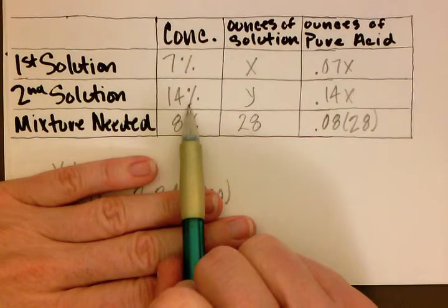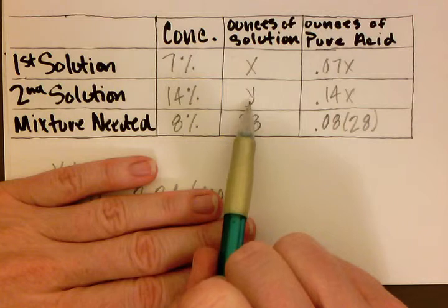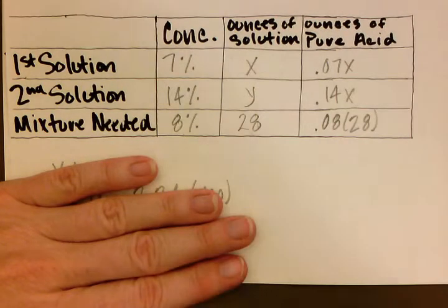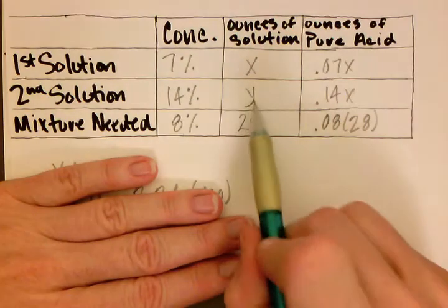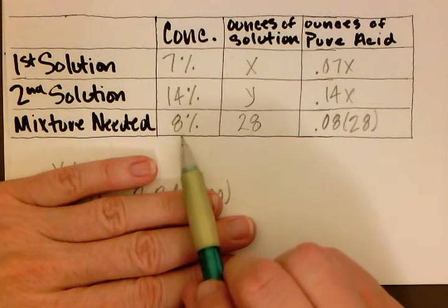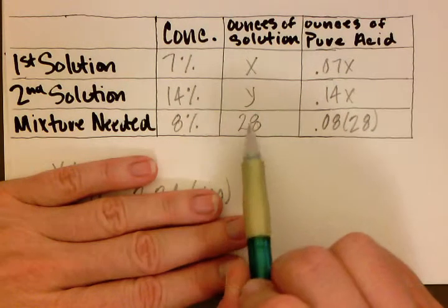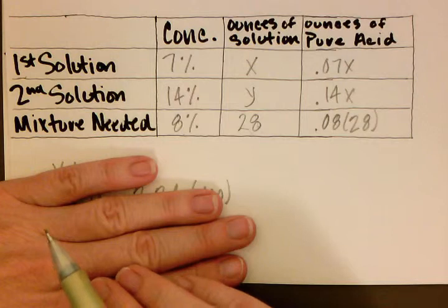Our second solution is the 14% solution. Once again, we don't know the number of ounces, so we'll assign that our y variable. And then we do know that we need that 8% solution and we need a total of 28 ounces.